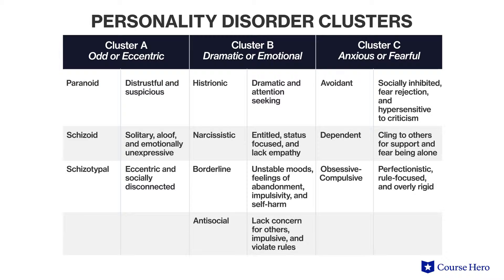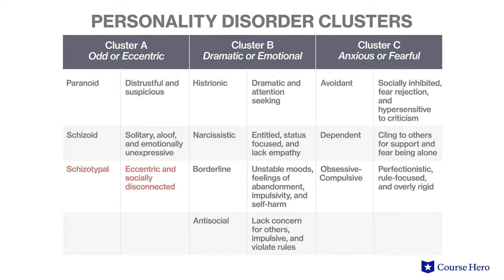The second disorder in this cluster is schizoid personality disorder. People with this disorder are solitary, aloof, and don't show emotional expression. It's important to note that these individuals may want intimacy and friendship, but they don't have the skills to create these relationships. The last disorder in this cluster is schizotypal personality disorder.